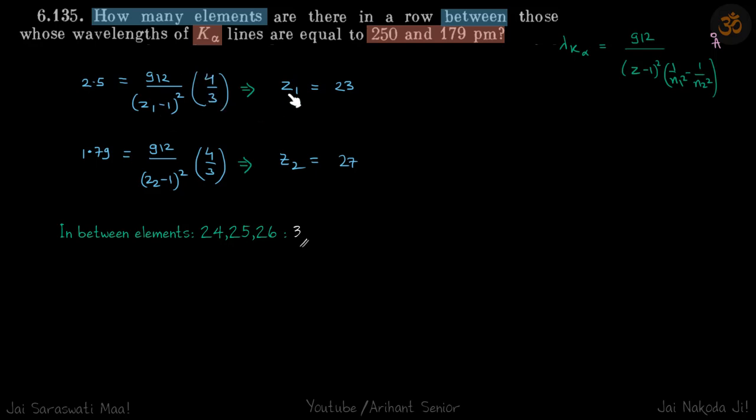So solving that we get z1 is equal to 23. And when we put 179, so here will be 1.79, we get z2 is equal to 27.